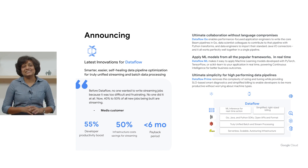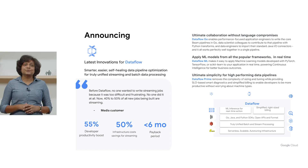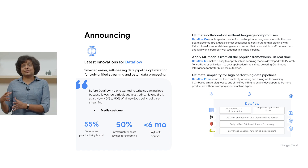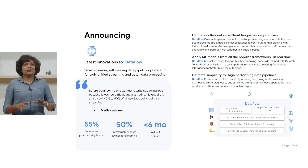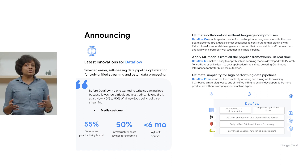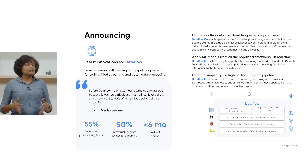I'm glad to share that the following Dataflow innovations are generally available today. Dataflow Go enables performance-focused application engineers to write the core Beam pipeline in Go, data scientists to contribute to that pipeline in Python, and data engineers to import their standard Java transforms — and it all works perfectly well together in a single pipeline. Dataflow ML for inference makes it easy to apply the output of machine learning models developed with PyTorch, TensorFlow, or scikit-learn to your applications in real time, powering continuous intelligence workloads for business outcomes.